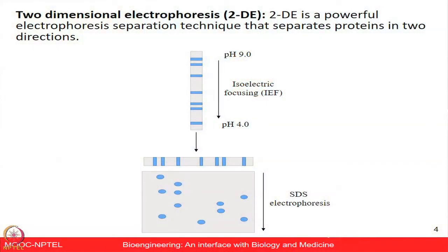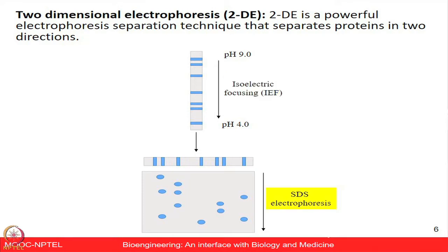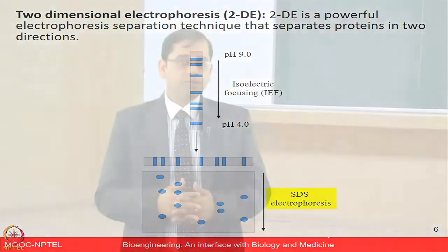2DE is a powerful electrophoretic separation technique that separates proteins in two directions. The first dimension is isoelectric focusing, which separates proteins on the basis of their unique isoelectric points. The second dimension is SDS-PAGE, which separates proteins on the basis of their molecular weight. Because two different protein properties are utilized — isoelectric point in the first dimension and molecular weight in the second — this technique is known as two-dimensional electrophoresis.